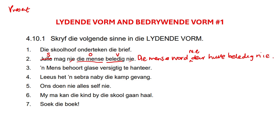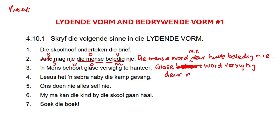Next one: ''n Mens behoort glase versigtig te hanteer.' What is the tense? Still present tense. What is the subject? 'n Mens. What is the object? Glase. Do we have time? No. Do we have manner? Yes — 'versigtig te hanteer.' What's our verb? 'Behoort.' So: 'Glase woord' — because it's present tense. No time. Manner: 'versigtig'. Then 'deur die subject': 'deur 'n mens.' No place. Then our verb: 'Glase woord versigtig deur 'n mens hanteer.'